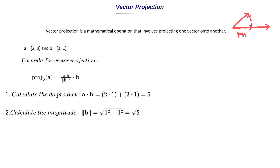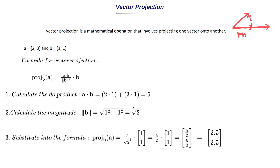Substituting all the values in the formula, we get 5 divided by (√2)² times the b vector (1, 1), which simplifies to 5/2 times (1, 1). This now becomes a scalar multiplication — we multiply the scalar 5/2 with the vector b = (1, 1), giving the result (2.5, 2.5). So the projection of vector b onto vector a is (2.5, 2.5).